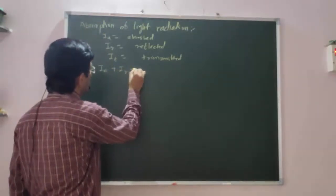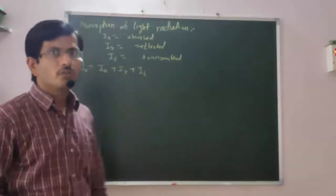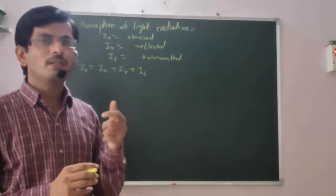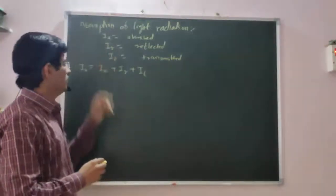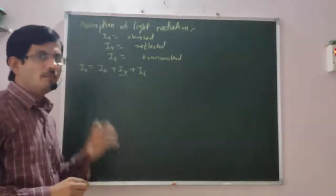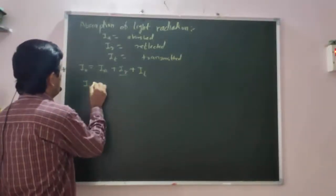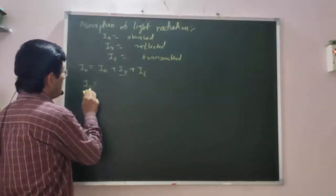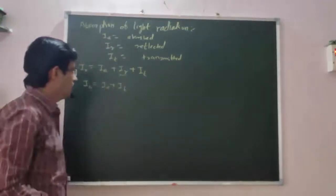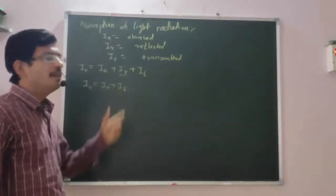So we can write: intensity of incident light radiation equals intensity of absorbed light radiation plus intensity of reflected light radiation plus intensity of transmitted light radiation. Now suppose the substance or system involved has zero reflection. Neglecting IR, we get I0 = IA + IT.